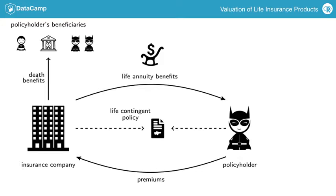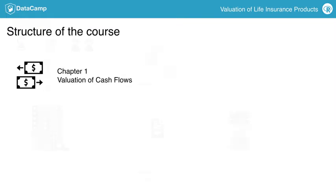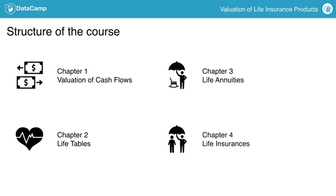You see that in all these examples, the future lifetime of the policyholder is crucial. Therefore, you will master the use of death and survival probabilities. Throughout the course, you will learn the key concepts of working with cash flows that represent financial transactions over time. Then you will work with a model for human mortality data. The combination of both prepares you to study life insurance contracts, such as life annuities and life insurance policies.